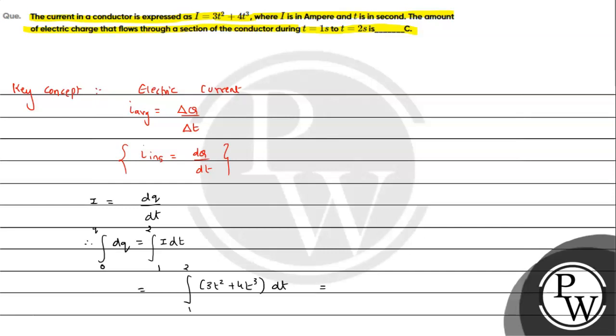And when we integrate this, we have the value t² integration t³ by 3, plus 4t³ integration t⁴ by 4, and limit will be from 1 to 2 seconds. So here we can see the value in the current equation. Therefore Q, that is the amount of charge flow in 1 to 2 seconds, will be Q equals, here 3 and 3 cancel, here 4 and 4 will be cancelled, so t³ plus t⁴, and when we put upper limit...